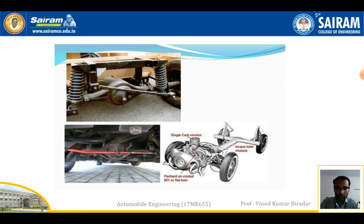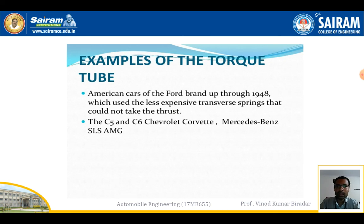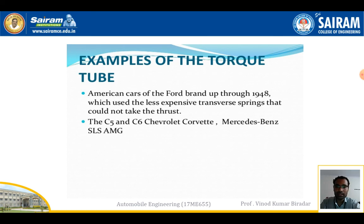Examples of vehicles using the torque tube drive include American Ford cars up through 1948, which used it because their less expensive transverse springs could not take the thrust. It is also used in the Chevrolet Corvette C5 and C6, and the Mercedes-Benz SLS AMG.